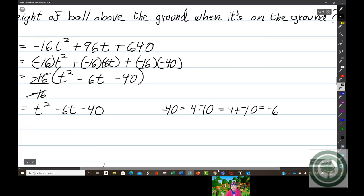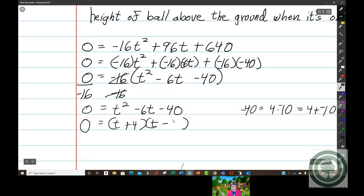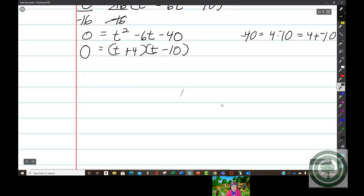Since 1 is the number in front of t squared, I don't have to use the AC method in grouping. All I have to do is group like this: t and t and plus 4 and minus 10. You set each factor equal to 0. T plus 4 equals 0, t minus 10 equals 0.